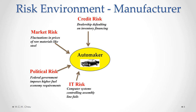An IT risk for an automaker could be, for example, the computer systems on its assembly lines all of a sudden crashing or failing, causing the assembly lines to come to a grinding halt and losing a day or a few days' worth of production.